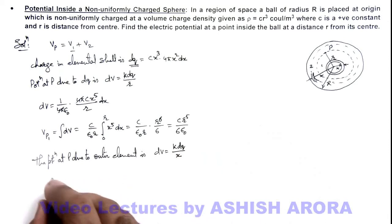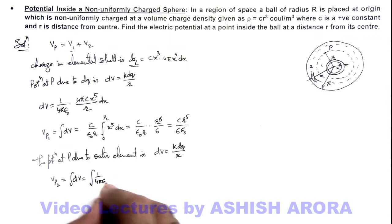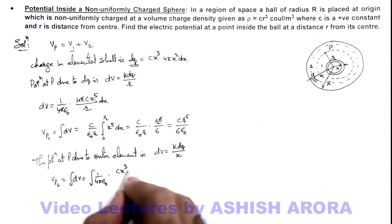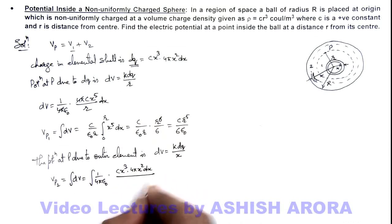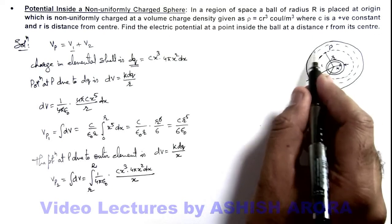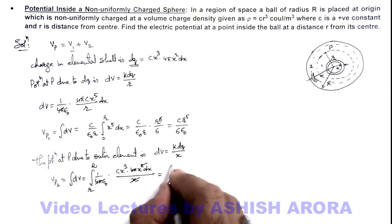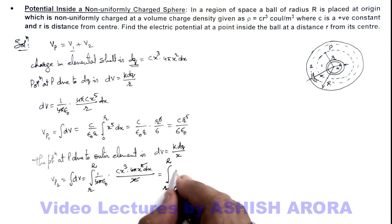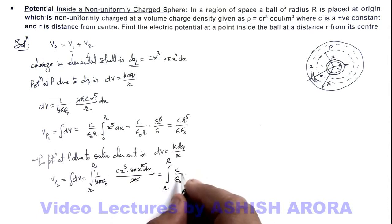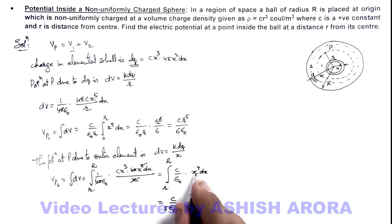So V2 is the integration of dV, which is the integration of (1/4πε₀) · cx³ · 4πx² dx / x, integrated from small r to capital R. The 4π cancels out and one factor of x also cancels, leaving the integration from r to R of (c/ε₀) · x⁴ dx. Integrating gives (c/ε₀) · x⁵/5 evaluated from r to R, which gives (c/5ε₀)(R⁵ − r⁵).